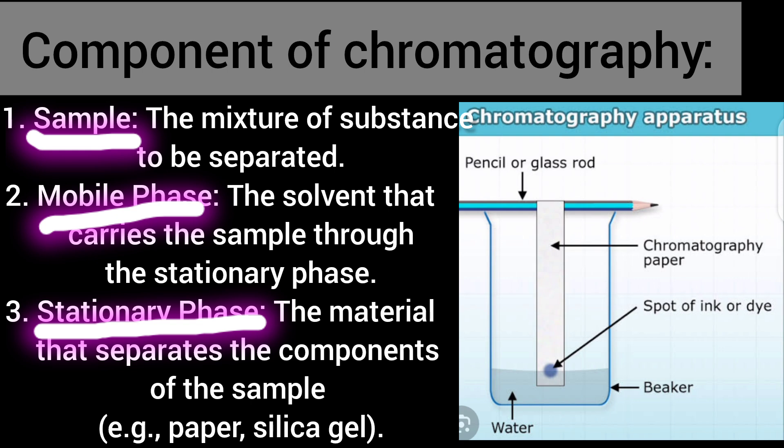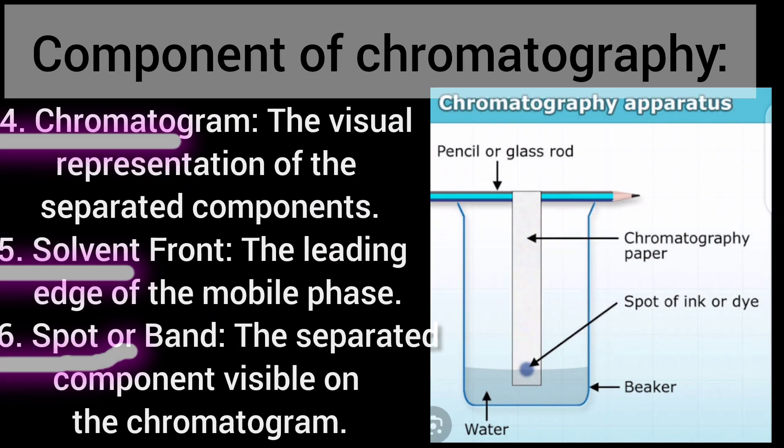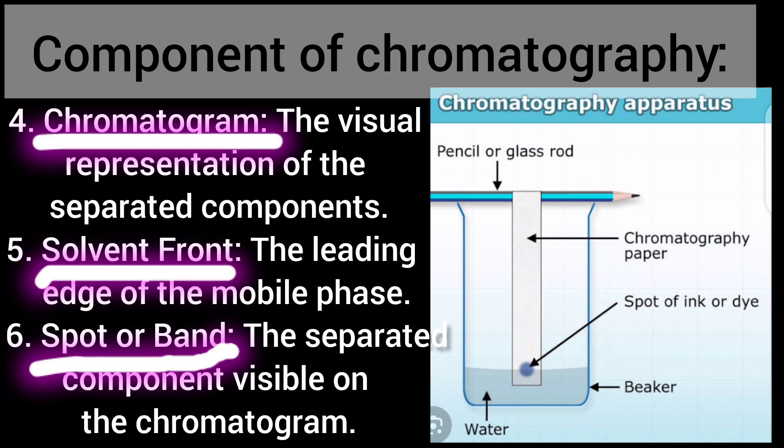Key terms in chromatography: Sample — the mixture of substances to be separated. Mobile phase — the solvent that carries the sample through the stationary phase. Stationary phase — the material that separates the components of the sample. Chromatogram — the visual representation of the separated components. Solvent front — the leading edge of the mobile phase. Spot or band — the separated component visible on the chromatogram.